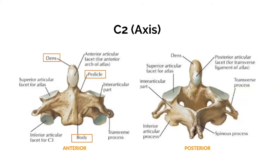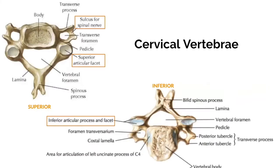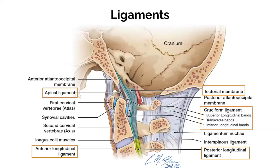C2, also known as the axis, is your strongest cervical vertebra. Note the dens that articulates with C1, the pedicle, body, and lamina on the posterior aspect. For the rest of the spine — this is C4 top left, C3 on the right — note the sulcus for the spinal nerve, the spinal cord, and the superior and inferior articular facets.